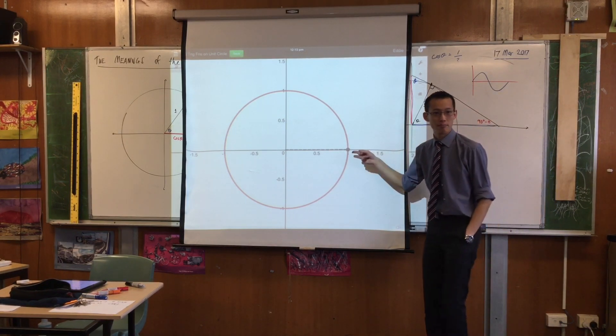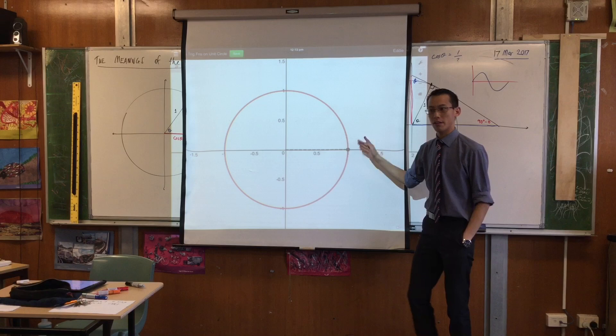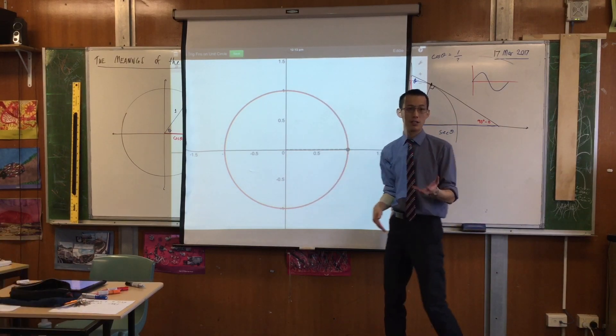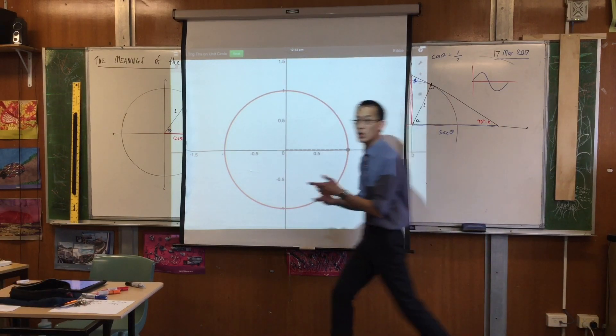Zero. This is where I begin, isn't it? So I would begin from here and then I would start going anti-clockwise as theta increases in size. Does that make sense? So watch as that happens.